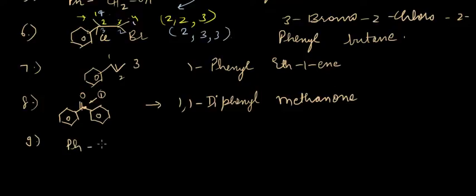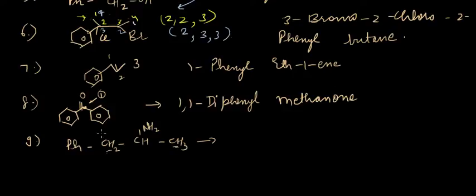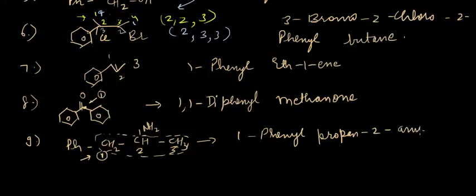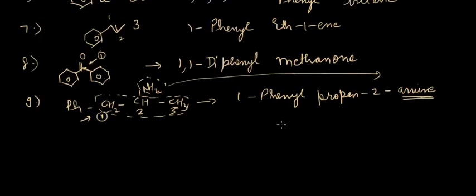For a structure with an amine group: the longest chain is identified and we start numbering from the carbon atom that gives the functional group the lowest number. Finding a substituent at the first carbon atom only, we number from that end: one, two, three. The name is 1-phenyl propan-2-amine, recognizing that the amine is a functional group and its suffix is used.